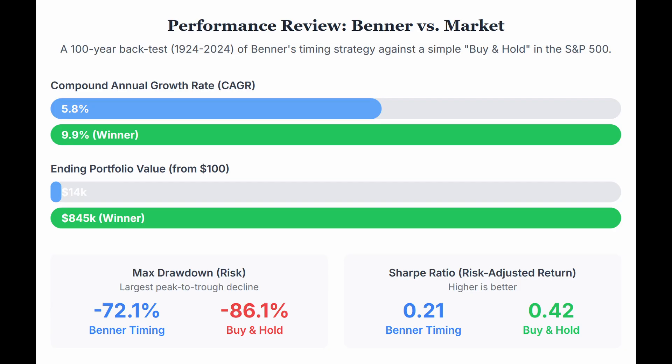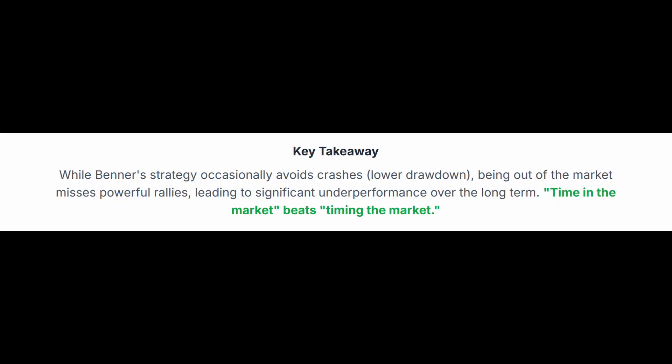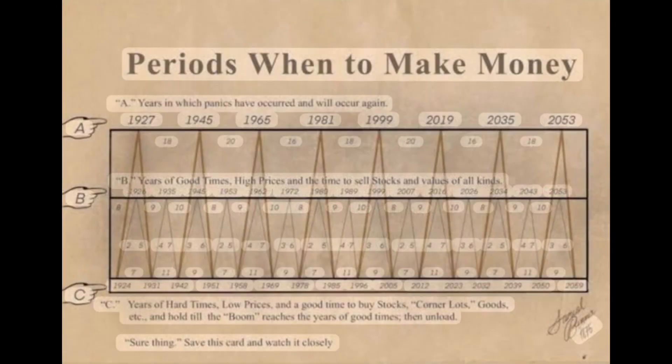So why do people still see hits and swear by the chart? It boils down to powerful psychological biases. Predictions cover entire years — a huge, forgiving target window — and the labels 'panic,' 'good times,' 'hard times' are vague and qualitative, allowing a lot of wiggle room and ex-post rationalization. This feeds right into confirmation bias: you focus on times it seemed right and ignore or explain away the misses. Systematic testing removes that wiggle room and the flaws become obvious.